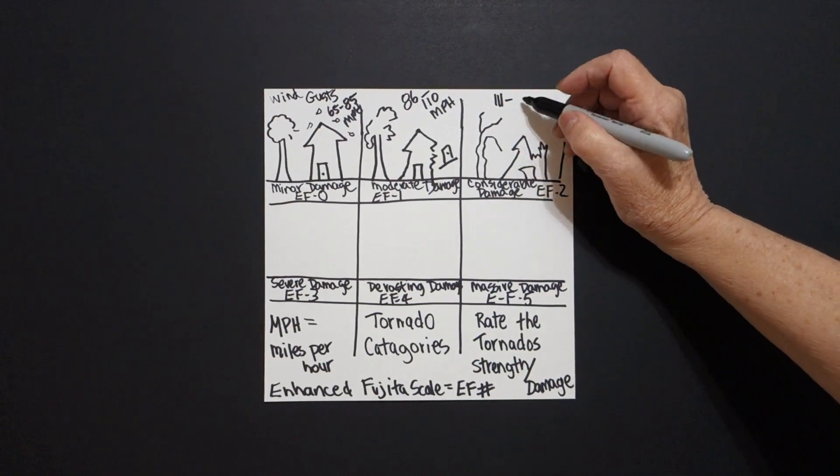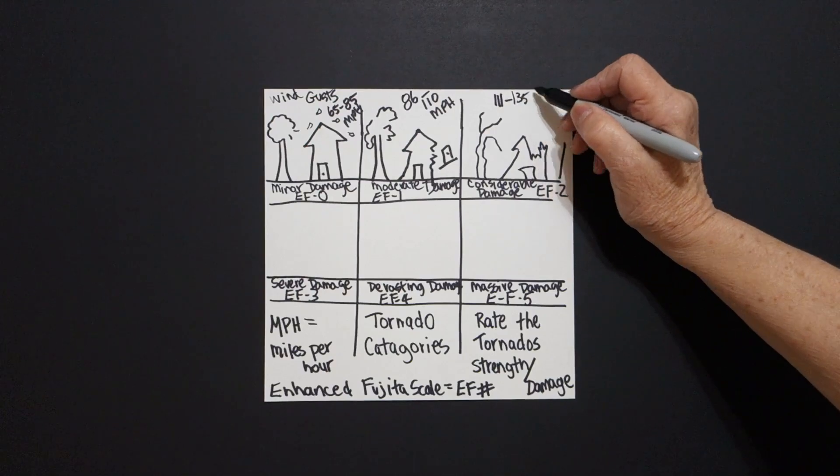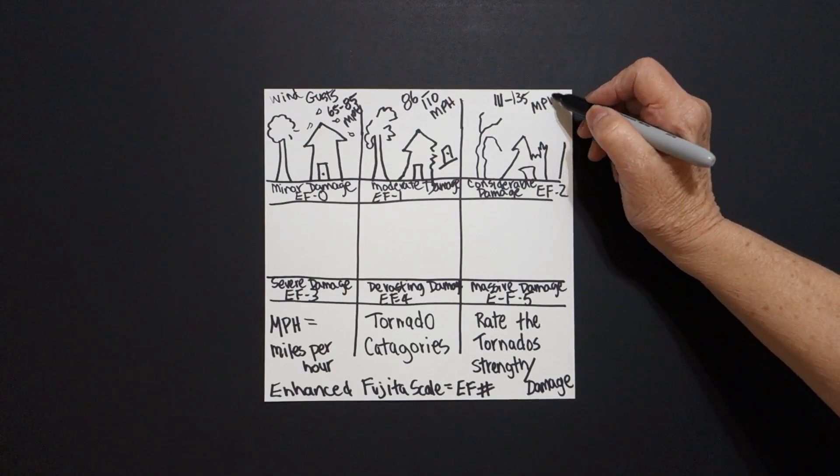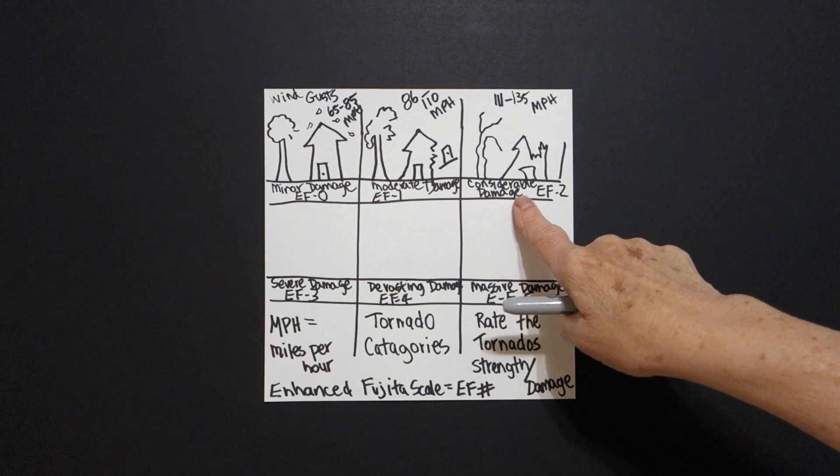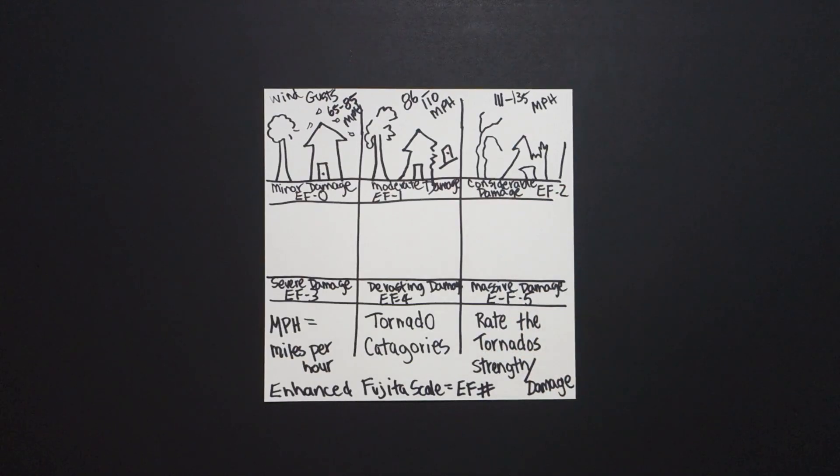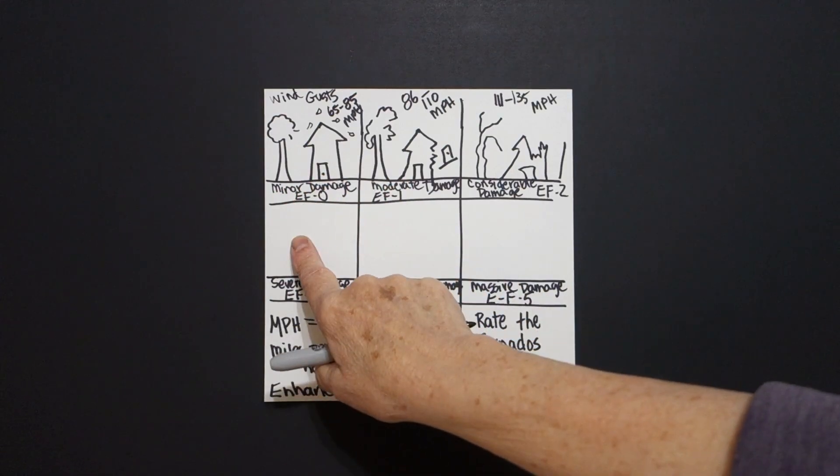111 to 135 MPH, miles per hour, considerable damage with an EF-2. Alright, next box.